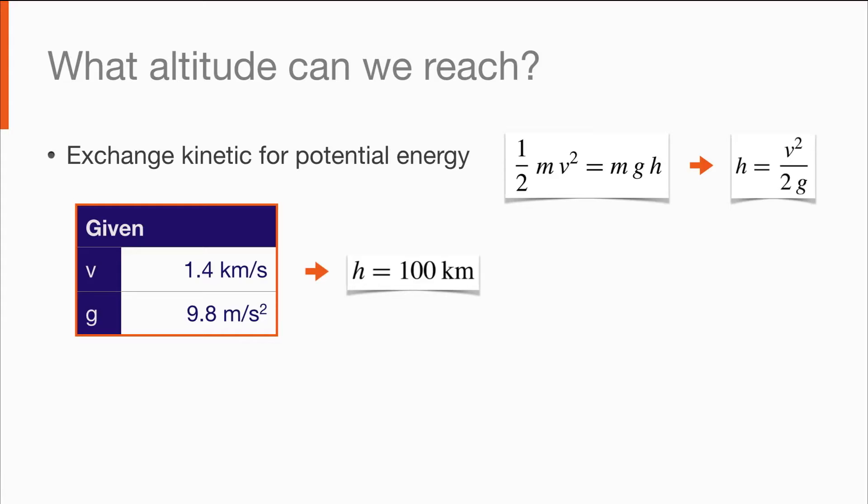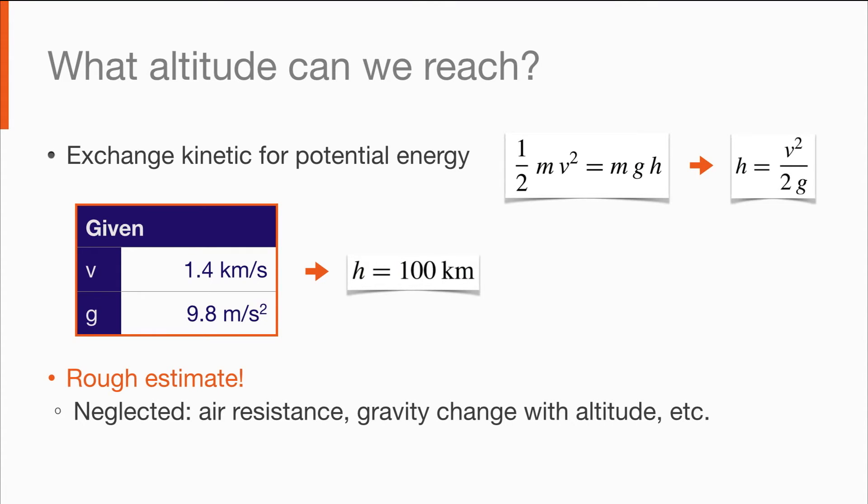We generally talk about being in space at about 130 km. Beyond that point, the atmosphere is thin enough that we can sustain an orbit for a reasonable period of time. Keep in mind that this is a very rough estimate. We've ignored a number of effects, including air resistance and the change of gravity with altitude, for example.